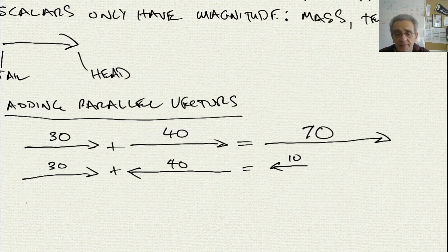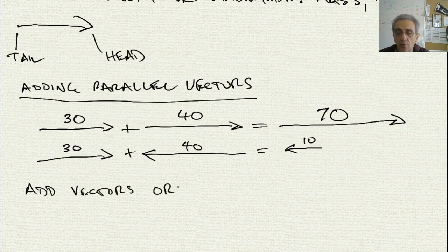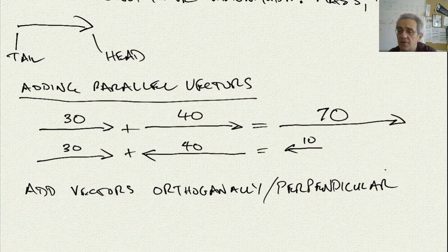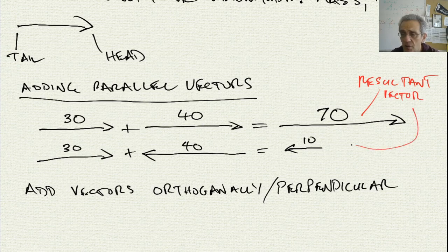Now, what if we add vectors perpendicularly, or orthogonally? Another word for orthogonal is perpendicular. There is one thing I forgot to write down — the vector resulting from this addition is called the resultant vector. It is the sum of the other two. The 70 and the 10 are called the resultant.